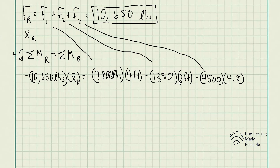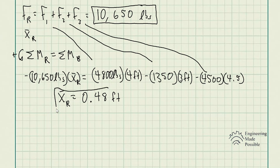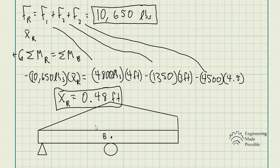Going back to the problem, we simplified the distributed loading and solved for the equivalent resultant force FR and its location x̄. The reason you simplify distributed loading into a concentrated load is that once you have a concentrated load at a specific point, you can solve for the reactionary forces at the supports. That's why it's always valuable to know how to simplify distributed loading into a concentrated load and find its location.